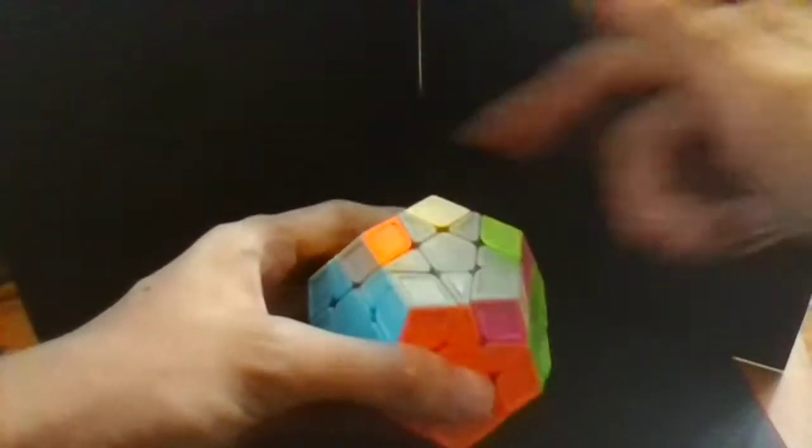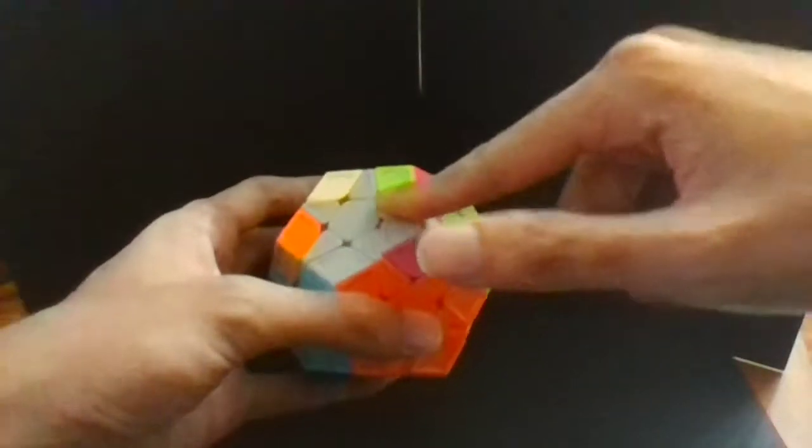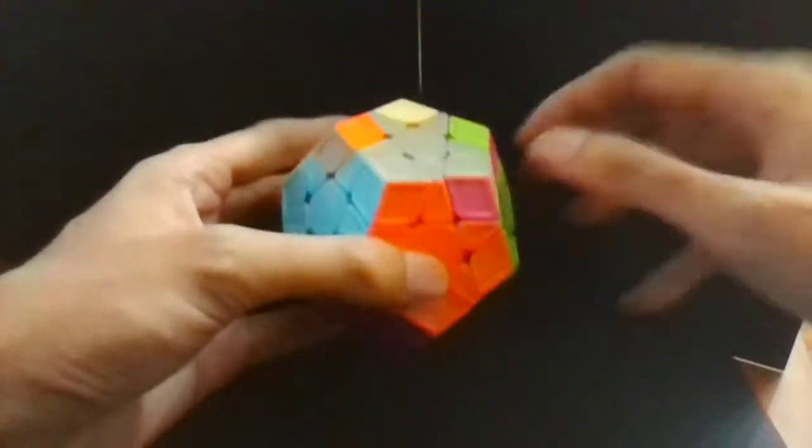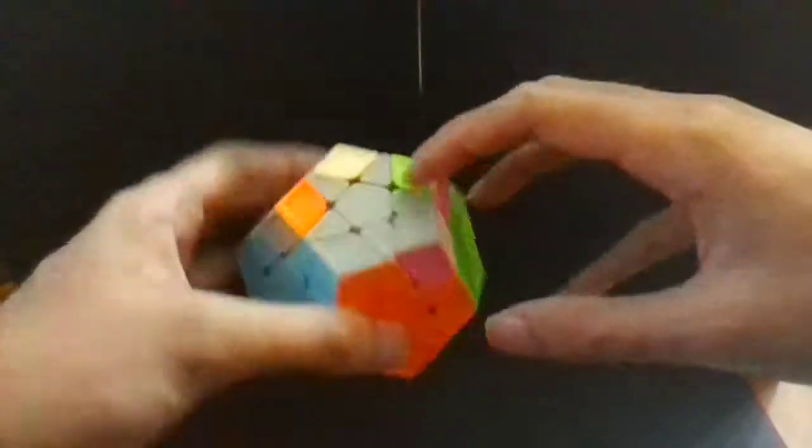So here instead of using a single sun, you can use a double indie sun which will permute the edges in the same way. But it does something else with the corners, so you can sometimes force yourself to be left with three corners rather than four corners.